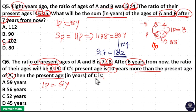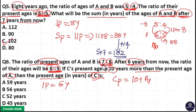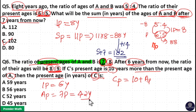One part is 6 years. We need the present age of C. C's present age is 10 years more than the present age of A. So we need to find the present age of A. The present age of A is equal to 7 parts, because the present age ratio of A and B is 7 is to 8. So present age of A is 7 into 6, which is 42 years. Therefore, C's present age is 42 plus 10, which is 52 years. So option C is your answer.